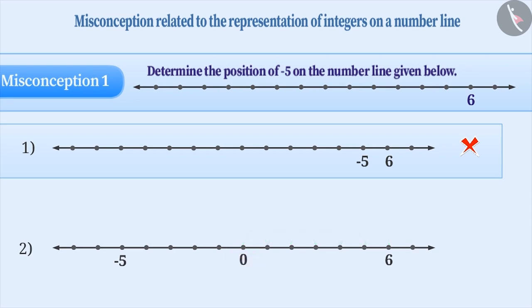After finding the position of 0, it is easy to determine the position of minus 5. Since minus 5 is a negative number, mark it by moving 5 places to the left of 0. Therefore, the correct answer is option 2.